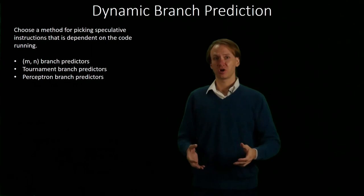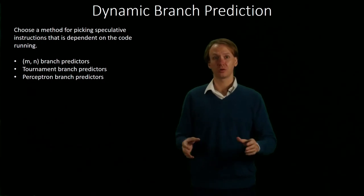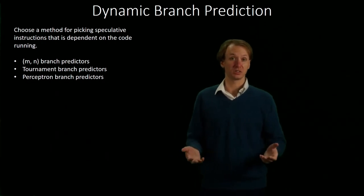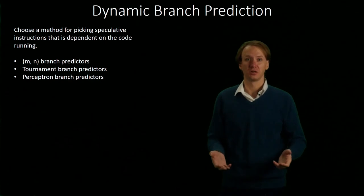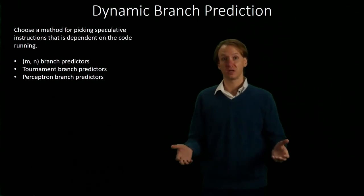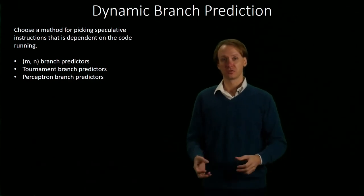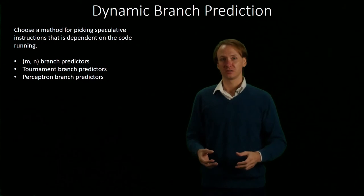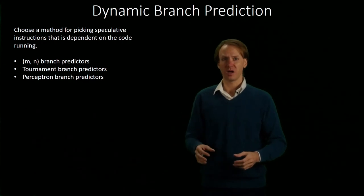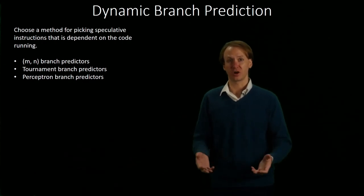Dynamic branch predictors end up being really popular because they increase the accuracy of branch prediction substantially. In some cases, we can even get above 90% accuracy. The result is a whole lot fewer no-ops going through our pipeline because of unexpected branches.